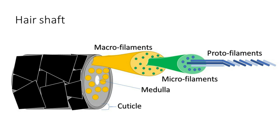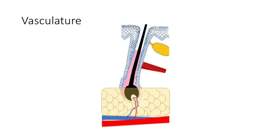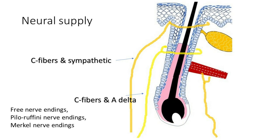Regarding vascular supply, hair follicles are surrounded by a dense and continuous plexus of capillaries, but the dermal papilla is the structure that directly receives vascularity from blood vessels, containing capillaries arising from the deep dermal plexus. The hair follicle is well innervated: C nerve fibers and sympathetic fibers form a ring at the neck of the hair follicle, while C fibers and A-delta fibers form a ring at the mid-isthmus. Other neural networks supply the erector pili muscle.